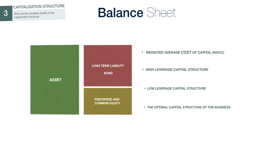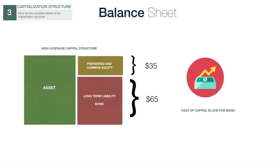High-leverage Capital Structure. Sometimes, the company allocates their capital by issuing more long-term debt, which is bond, instead of more equity. The reason is because the cost of capital is low, which means the company only pays the promised fixed interest. But in case the company offers more equity to make more capital, the existing investors have to share their profits and rights, so their value and return will reduce.